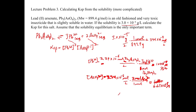Looking at the ICE table for clarity: we start at 0 molar for both ions, the change is plus 3x and plus 2x, giving equilibrium concentrations of 3x and 2x. You can see the 3-to-2 ratio is preserved — the values 1.00 times 10 to the minus 7 and 6.67 times 10 to the minus 8 are in a 3-to-2 ratio, which comes directly from the stoichiometry of the dissolution.